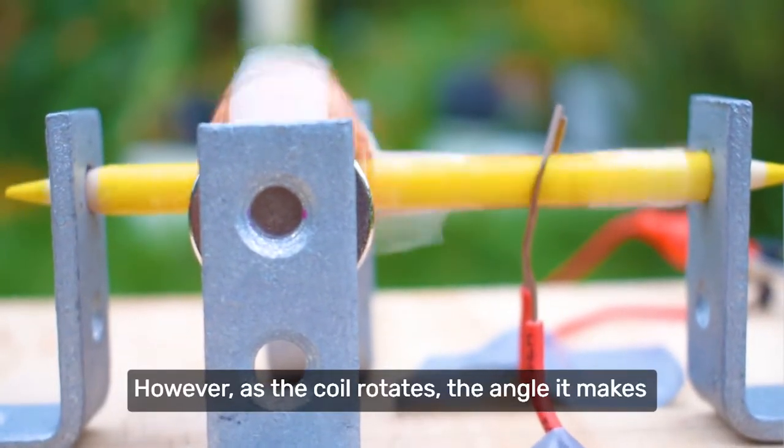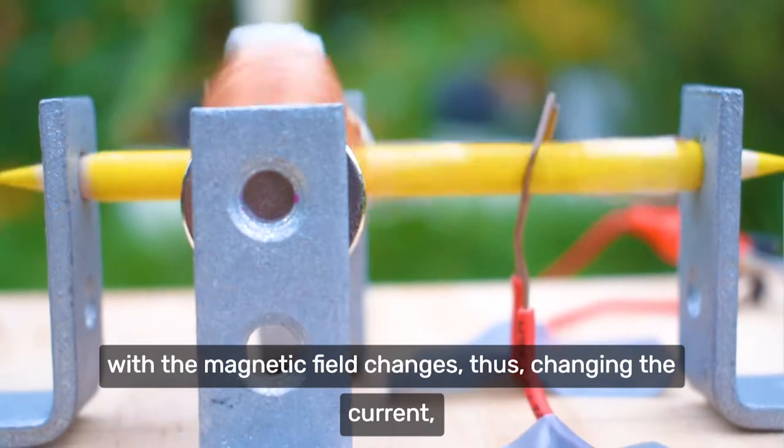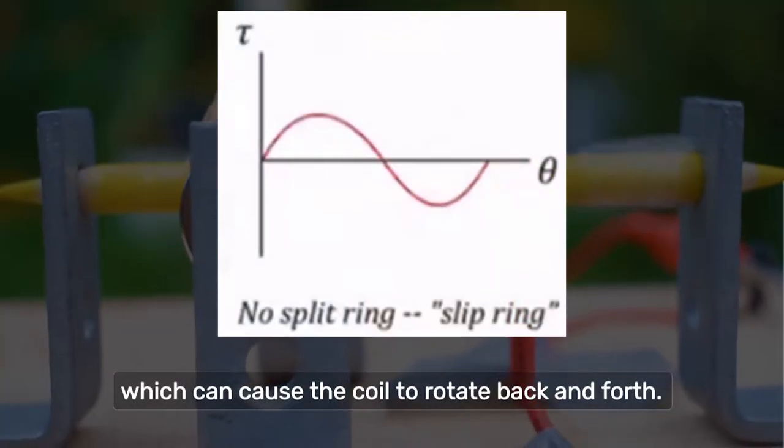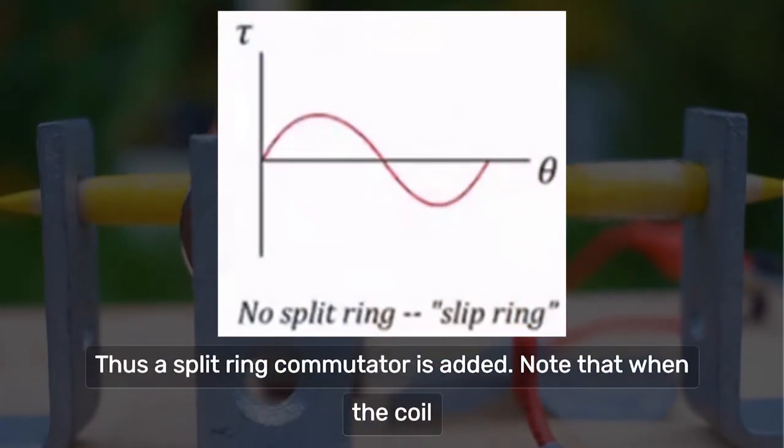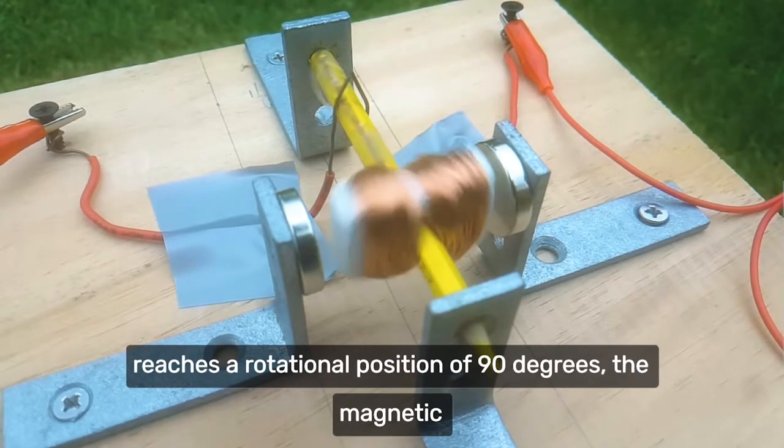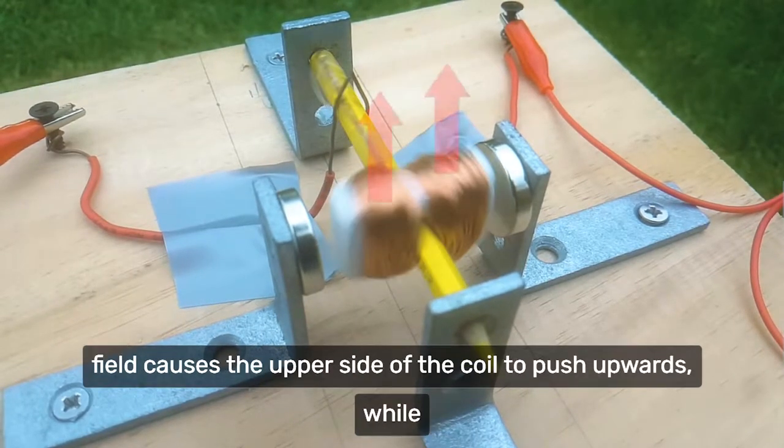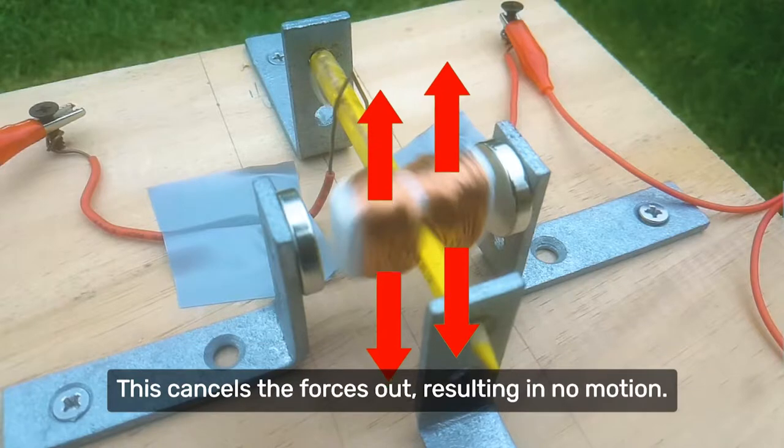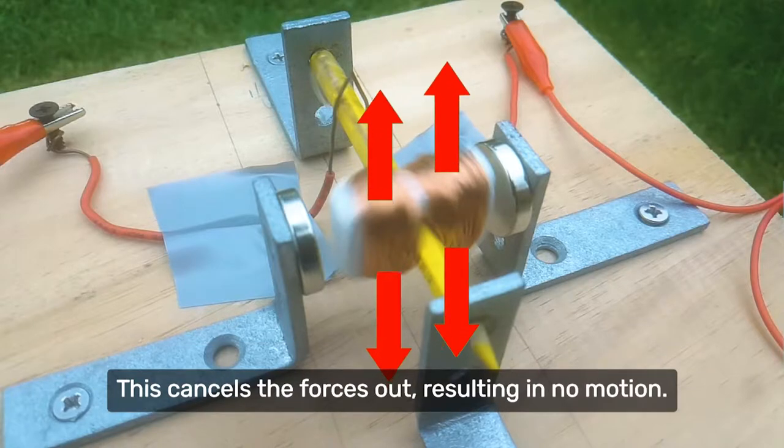However, as the coil rotates, the angle it makes for the magnetic field changes, thus changing the current, which can cause the coil to rotate back and forth. Thus, a split ring commutator is added. Note that when the coil reaches a rotational position of 90 degrees, the magnetic field causes the upper side of the coil to push upwards, whilst the lower side pushes downwards. This cancels the forces out, resulting in no motion.